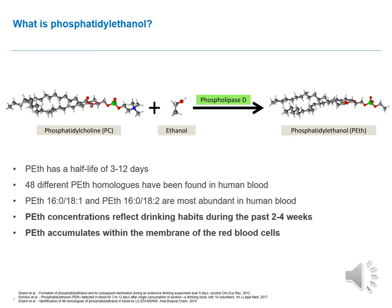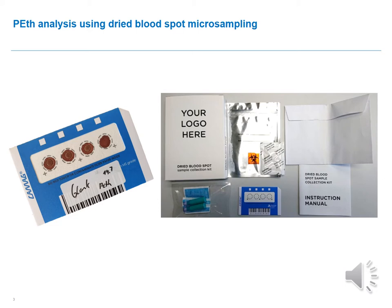PET concentrations reflect drinking habits during the past 2 to 4 weeks and can be a valuable tool for abstinence monitoring. As PET accumulates within the membrane of the red blood cells, PET is somewhat hematocrit dependent. Due to the presence of various enzymes and also as PET contains two fatty acyl chains, PET is unstable in liquid blood unless stored at minus 80 degrees Celsius.